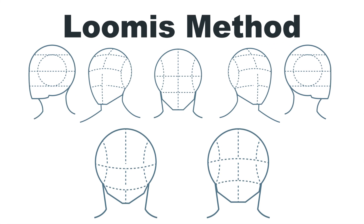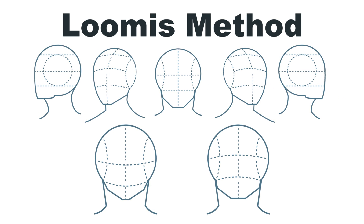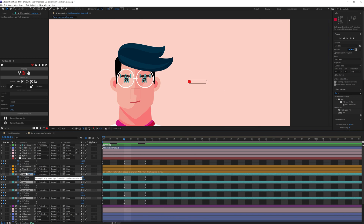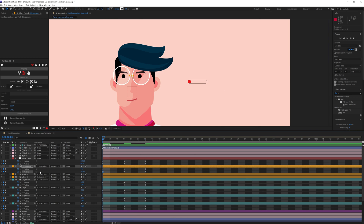Let's first understand the Loomis method. The Loomis method is mainly used in drawing the human head in different angles, but it is also helpful when you are rigging and animating a face in After Effects in fake 3D.